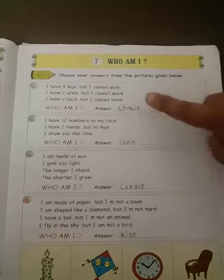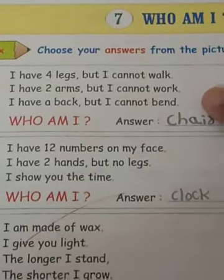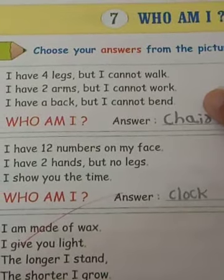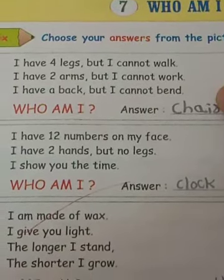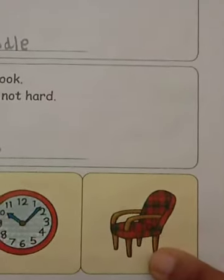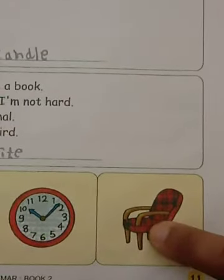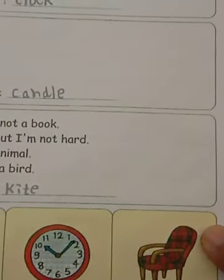See the first sentence. I have 4 legs, but I cannot walk. I have 2 arms, but I cannot work. I have a back, but I cannot bend. Who am I? Here, 4 pictures are given — 1, 2, 3, 4. You have to identify which one it is. The answer is chair. 4 legs are there, 2 arms are there, 1 back is there — that back is not able to bend. So the answer is chair.